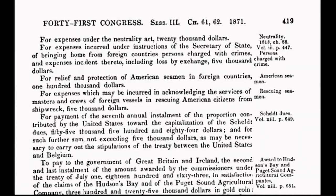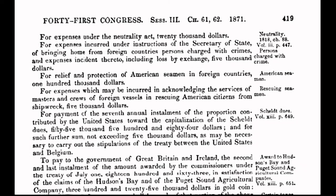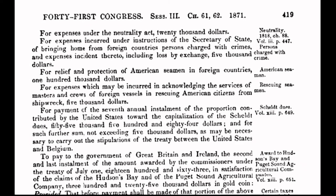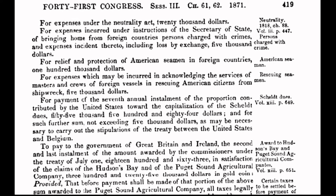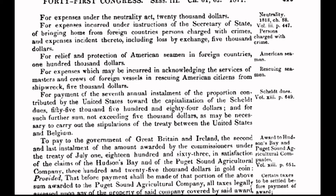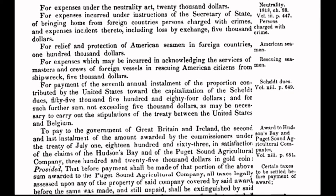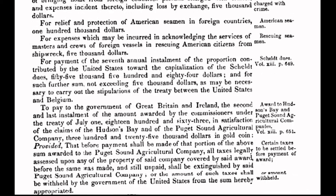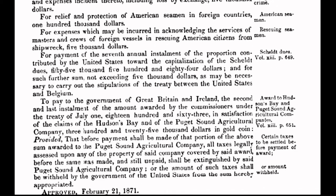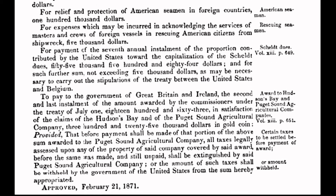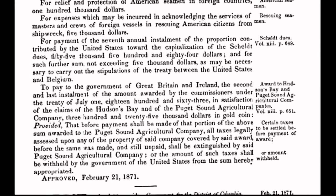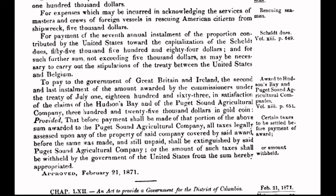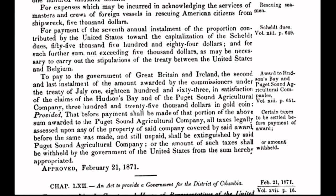In today's program, I will put the spotlight on an act that was enacted on February 21st, 1871. Congress passed an act to provide a government for the District of Columbia, also known as the Act of 1871. When you fully understand the ramifications of the past, you will fully understand the ramifications of the present, and you will know how to change the future. And here is where our story begins.